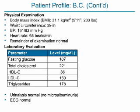His examination shows that at a height of 5 feet 11 inches and a weight of 233 pounds, he has a body mass index of 31.1 kilograms per square meter. His waist circumference is 39 inches. His blood pressure is 161 over 93 mmHg, and his heart rate is 68 beats per minute. The remainder of his physical examination is normal.